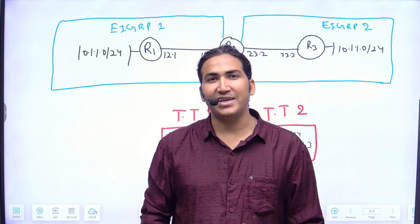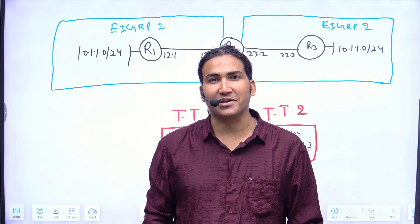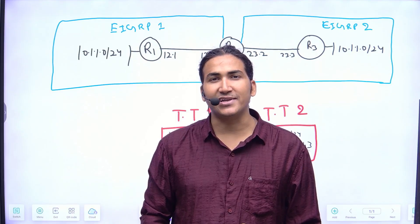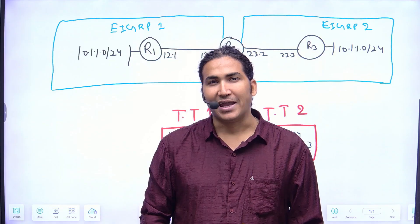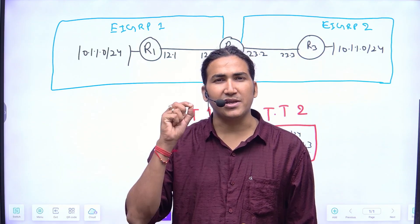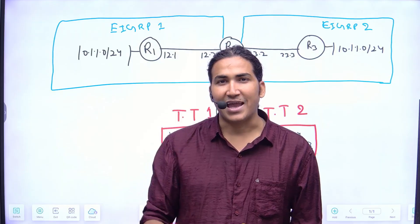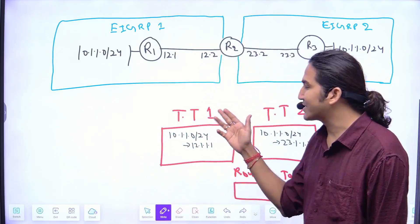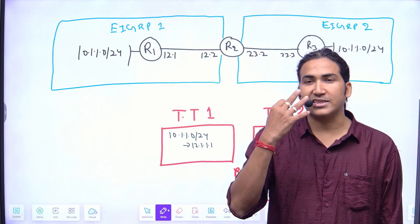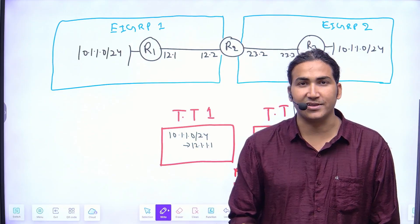Welcome to the real-world scenario-based networking series. Today I have another interesting scenario for you, and today's scenario is based on EIGRP inter-AS behavior. In my topology on the screen, there are 3 routers: R1, R2, and R3.